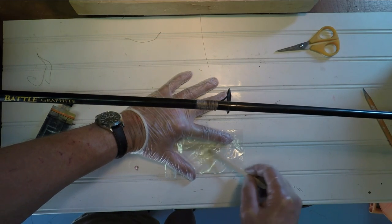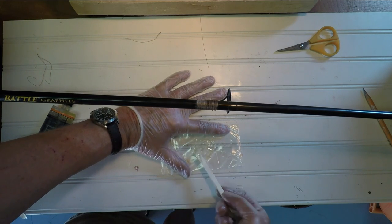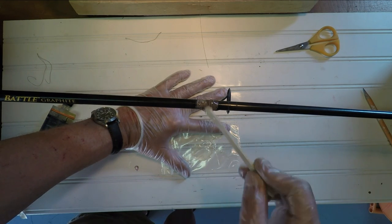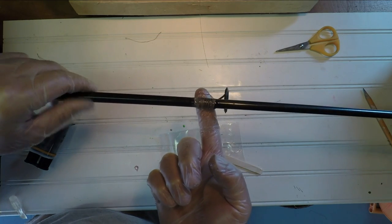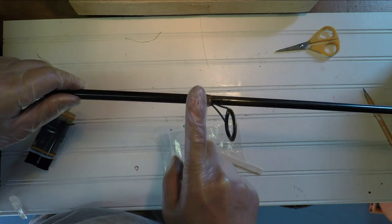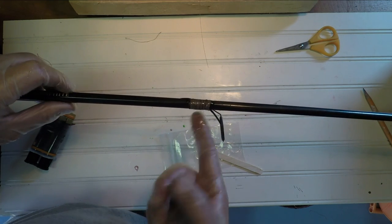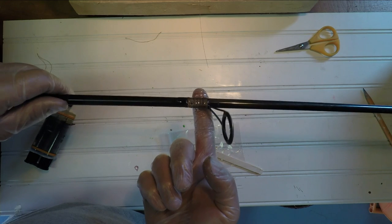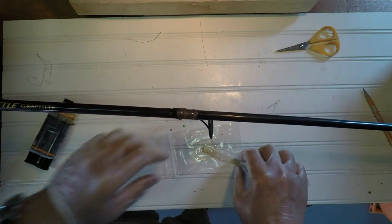So mix up the epoxy. You don't really need much. And then put a glob on. Now the pros will have a little motor that will turn the rod while the epoxy sets up to keep it from making a blob someplace. So since this is five minute epoxy, I'm just using my finger to smooth it out. Put a little bit more on.